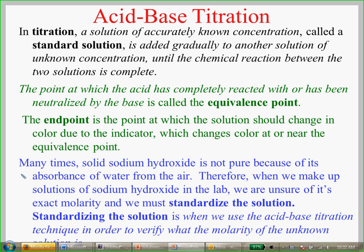The reaction continues until the chemical reaction between the two solutions is complete — you're going to see a change of color. The point at which the acid has completely reacted or been neutralized by the base is called the equal balance point. Most titration curves look like an S-shape; the equal balance point is right in the middle. You're going to use Vernier software to actually see the graph line being created as you add the standard solution.